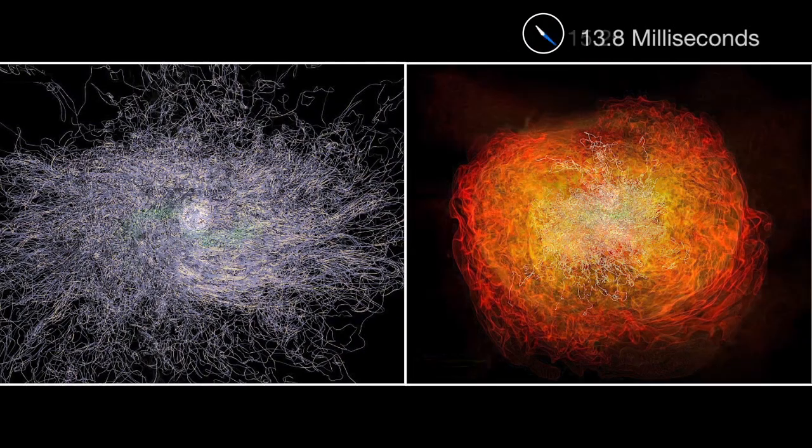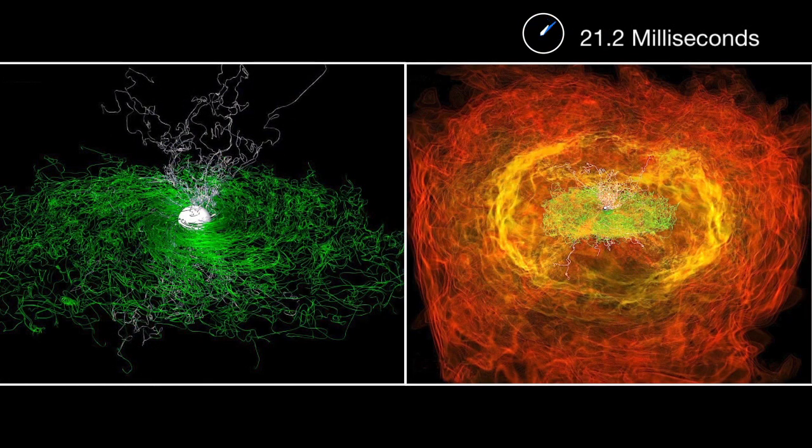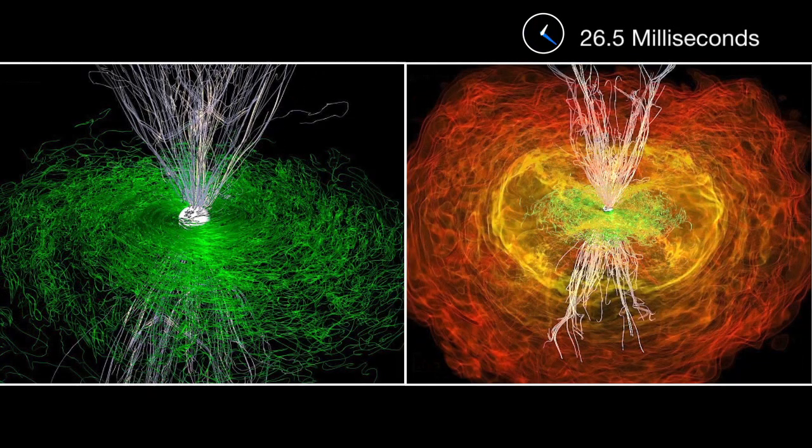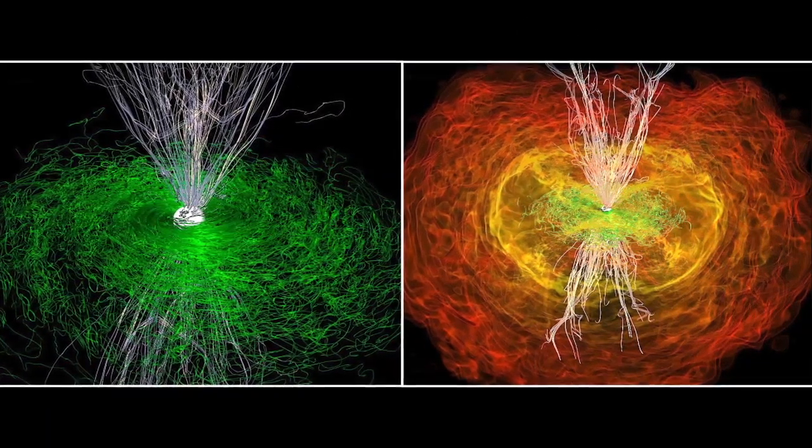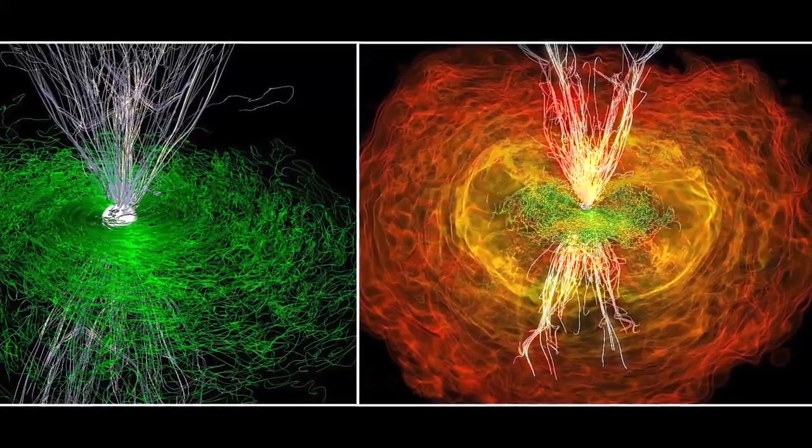Amidst this incredible turmoil, the white field has taken on the character of a jet, although no matter is flowing through it when the simulation ends. Showing that chaotic magnetic fields suddenly become organized as jets provides scientists with the missing link.